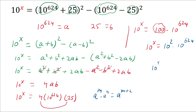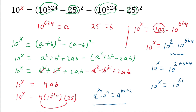Applying this rule to the right hand side, we get 10 power (2 + 624), which is 10 power 626. So 10 power x equals 10 power 626. Since the base is the same, the powers must also be equal. Therefore, the value of x is 626.